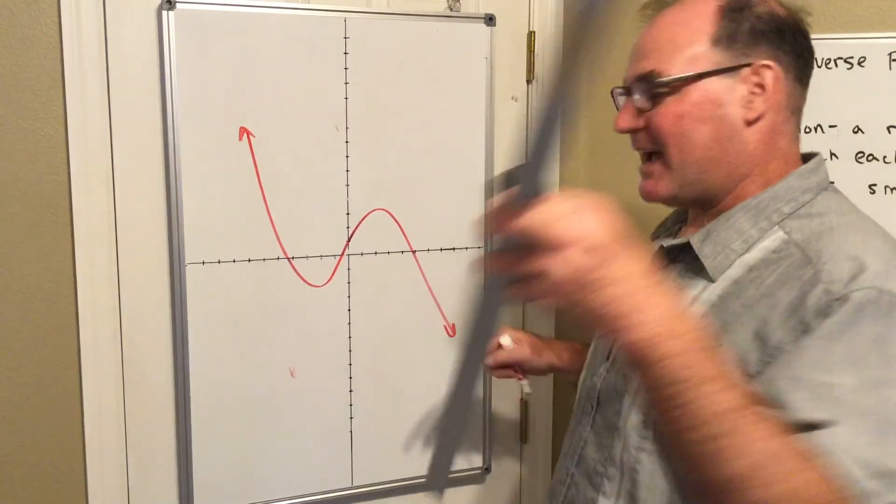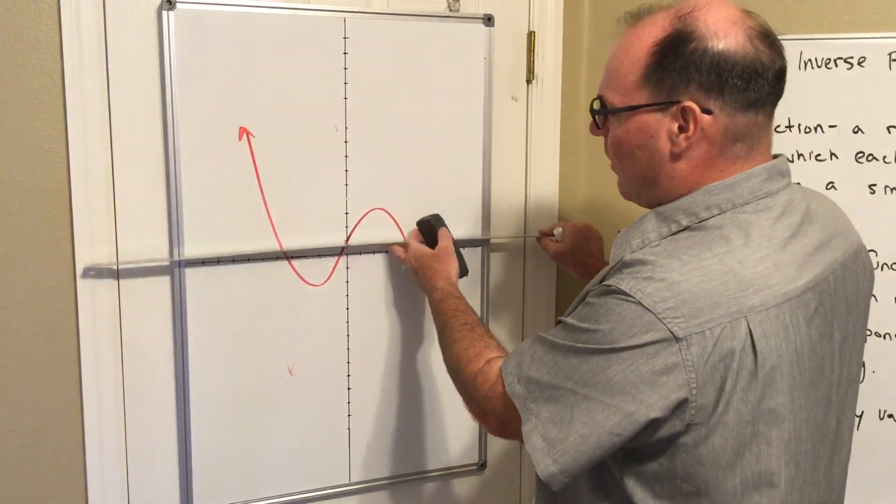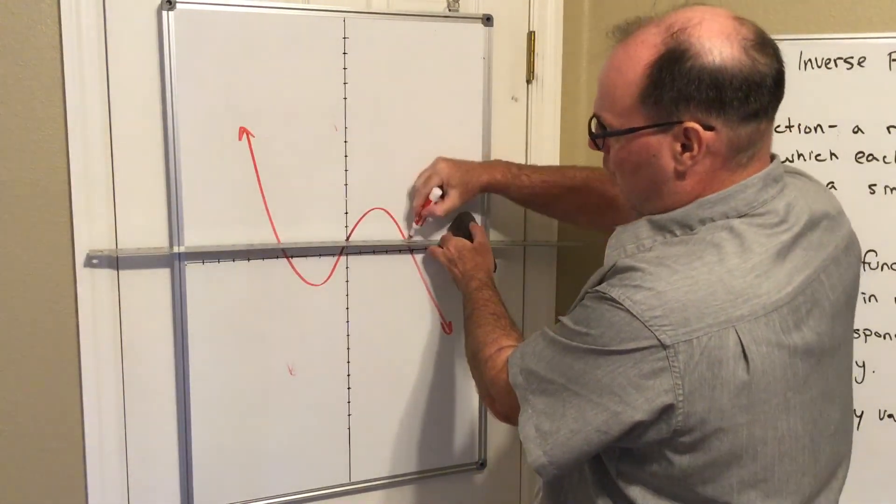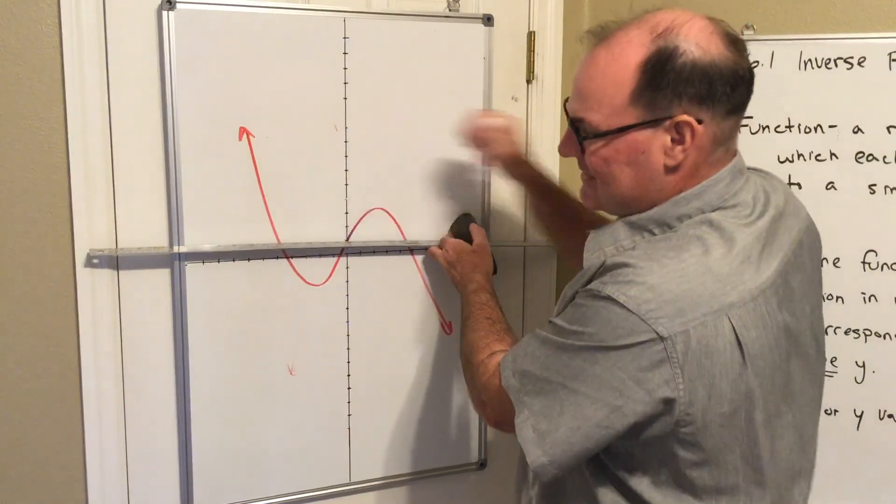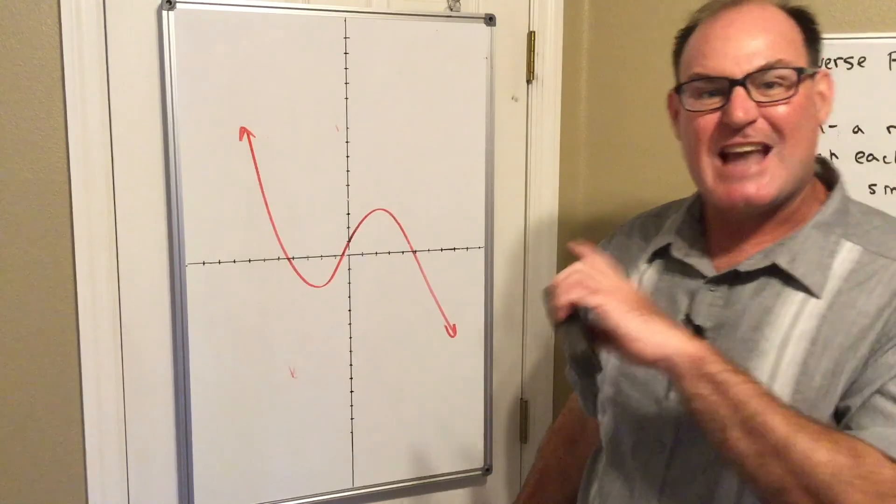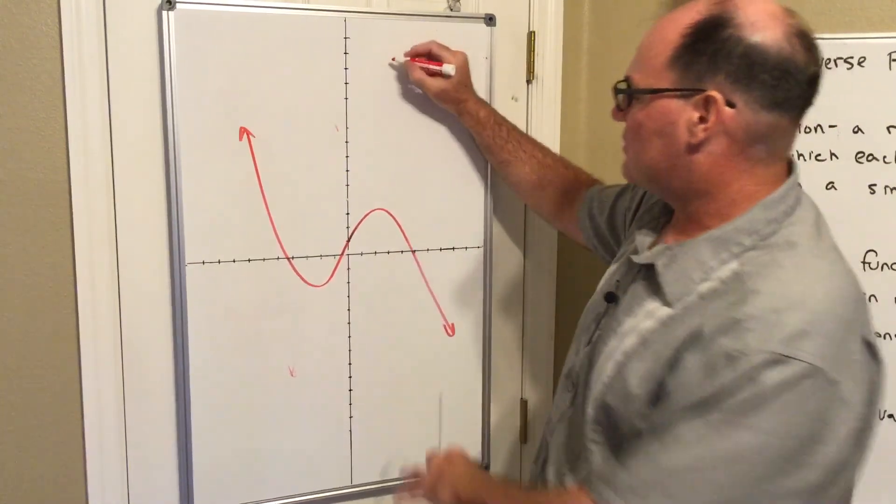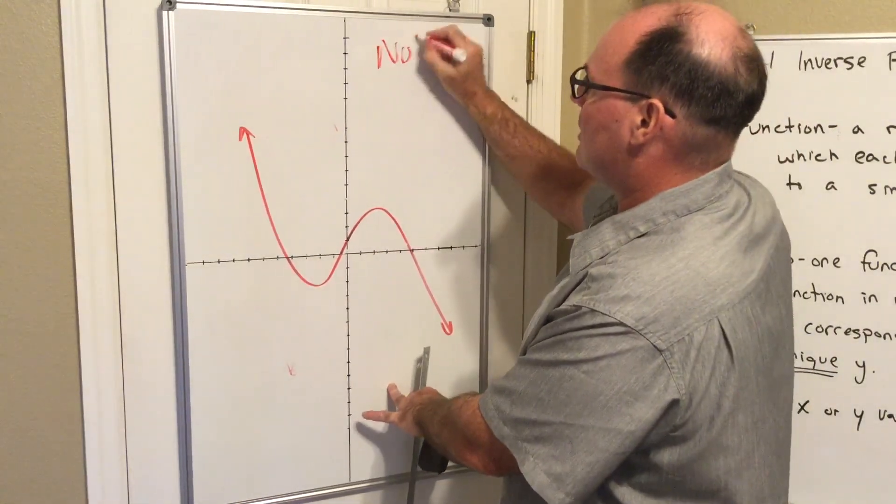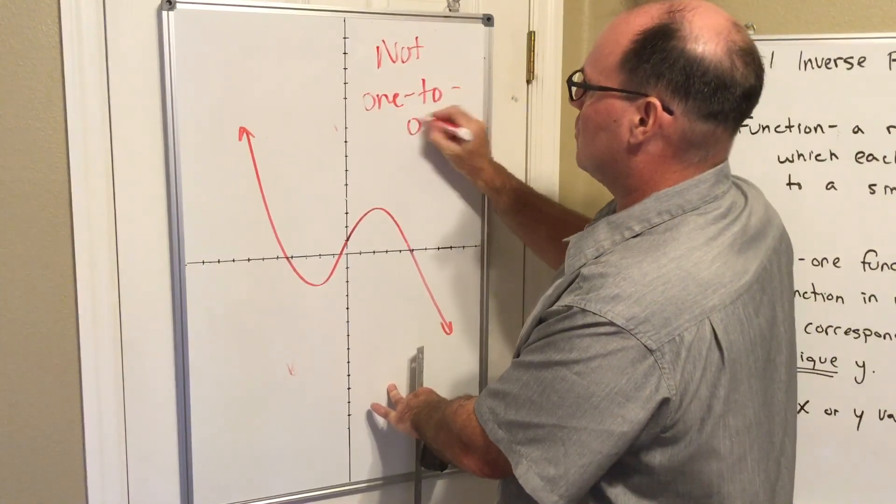And when I take my horizontal line test, notice that y value there is used one, two, three times. So it's been repeated. So that means that that graph is not a one-to-one function. So I write my answer not one-to-one.